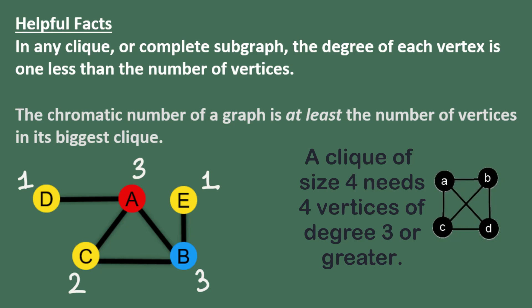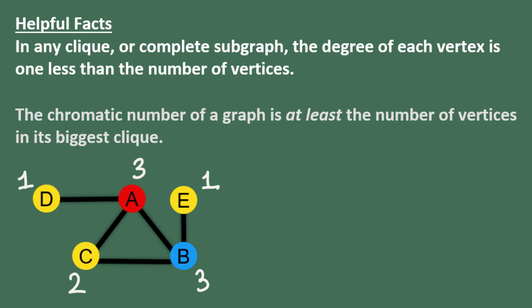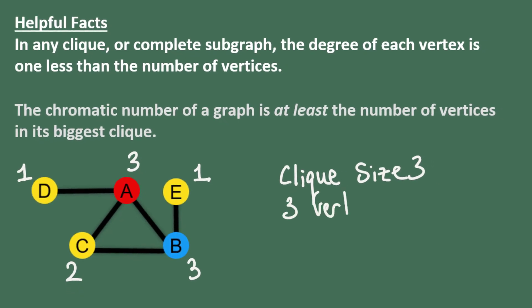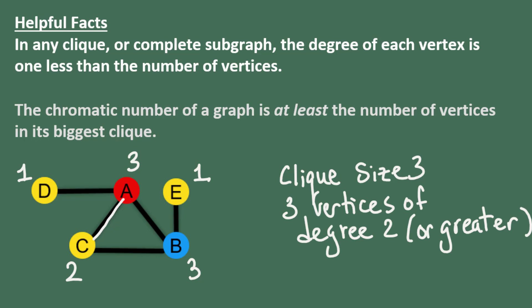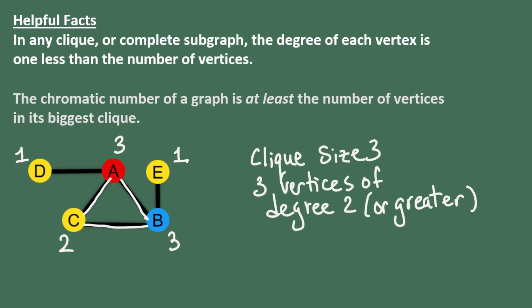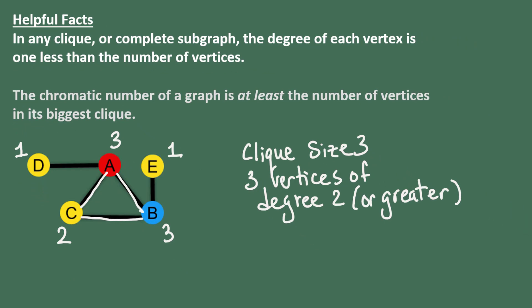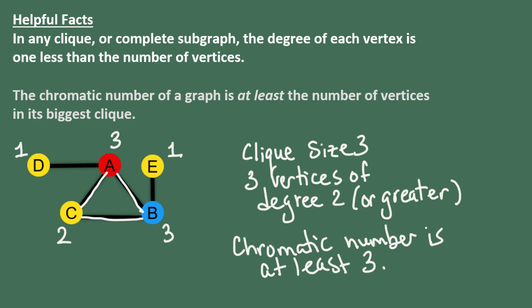Notice that this graph could not have a clique of size four because that would require four vertices of degree three. Could it have a clique of size three? To have a clique of size three, we would need three vertices of degree two or greater. Vertices A, B, and C have degree two or greater, and you can see that this is a clique of size three — a complete subgraph of size three. So we can conclude that the chromatic number is at least three.